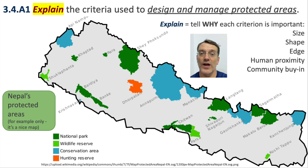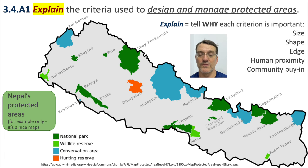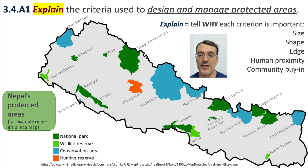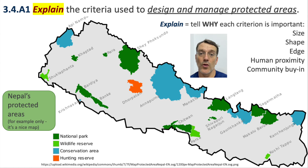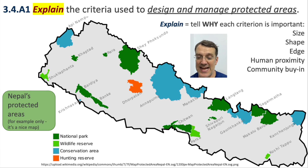You may be asked to explain the criteria used to design and manage protected areas. Here we have protected areas in Nepal — the blue ones along the northern and northwestern borders. One near Annapurna is quite large and almost round in shape, suggesting it could be a very successful protected area. In the southwest near Bardia and Banke, there are two long, skinny conservation areas with a lot of edge effect and a small core zone, located far from other conservation areas, which inhibits the migration of animals in and out.